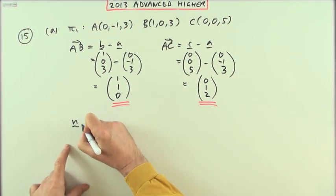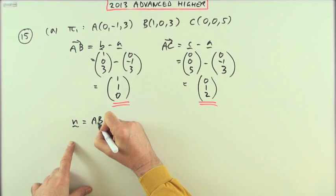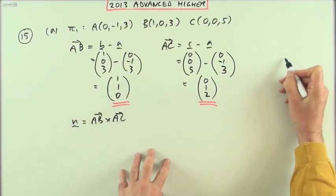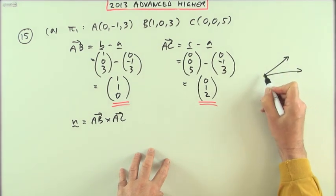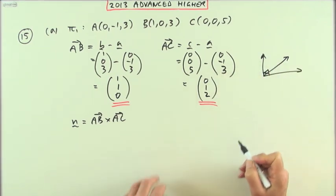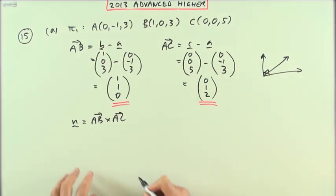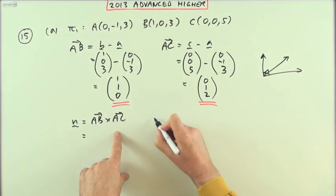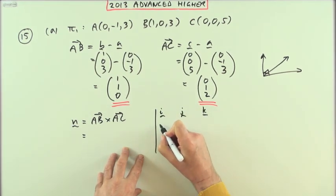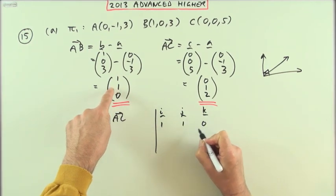So the normal to the plane can be found by taking the vector product of these two. If those are vectors that lie on the plane, then the vector product will give me a vector perpendicular to them both, perpendicular to the plane. For that part, I'll set out the determinant: i, j, k with (1,1,0) and (0,1,2).